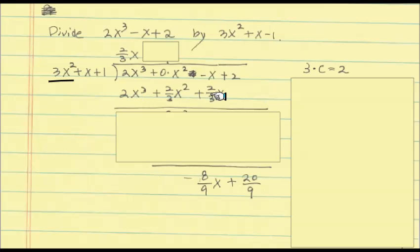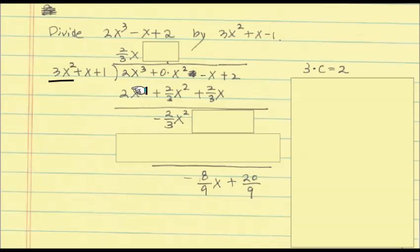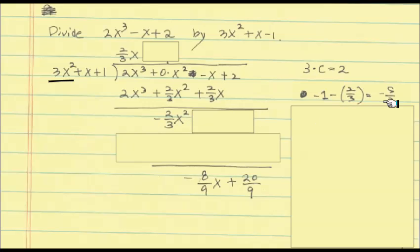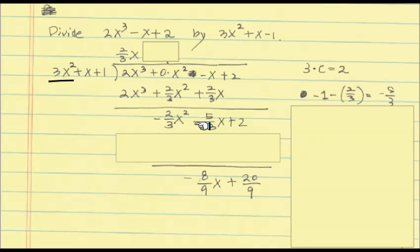Next, we subtract this bottom line from the dividend. This leading term is matched, so it's always supposed to be 0. The next term lines up with x², and that's why we inserted the 0 times x² placeholder. Since we're subtracting, we get negative 2/3 x². For the x term: the coefficient is negative 1, and we subtract positive 2/3, which gives negative 5/3.